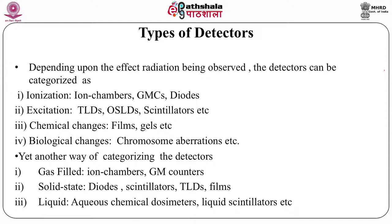There is one more way of categorizing radiation detectors: gas-filled detectors (for example, ion chambers and GM counters), solid-state detectors (for example, diodes, scintillators, TLDs, and films), and liquid detectors in aqueous form — for example, aqueous chemical detectors and liquid scintillators.